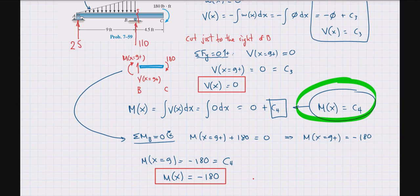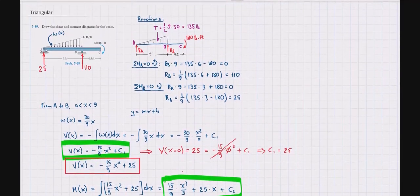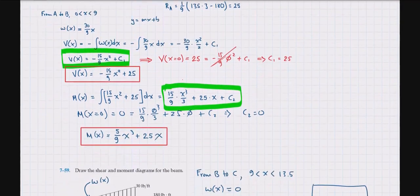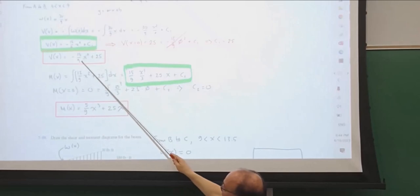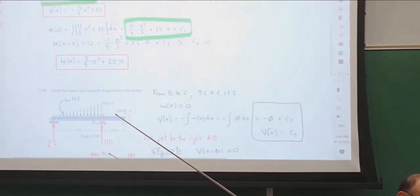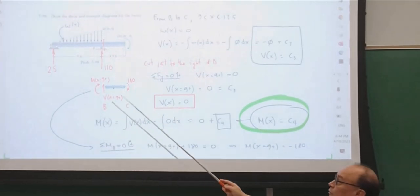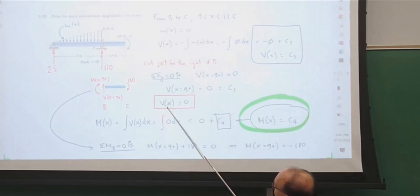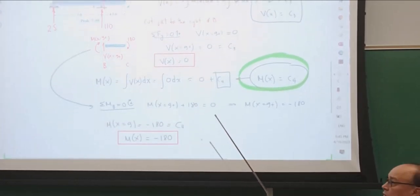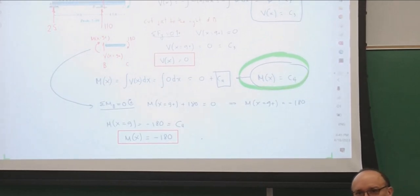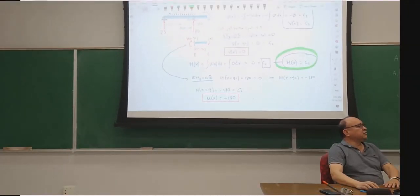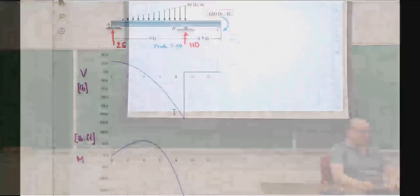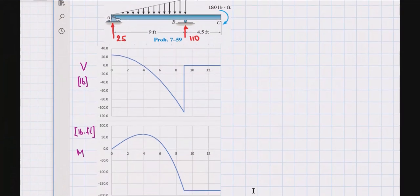So to summarize: from A to B (0 to 9), shear is V(x) = −(15/9)x² + 25 and moment is M(x) = −(5/9)x³ + 25x. From B to C (9 to 13.5), shear is V(x) = 0 and moment is M(x) = −180. Those are all the equations for this beam.